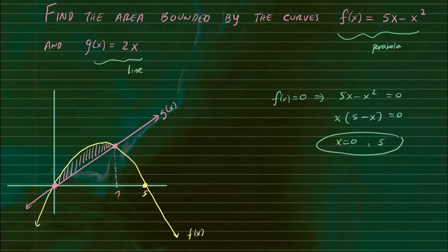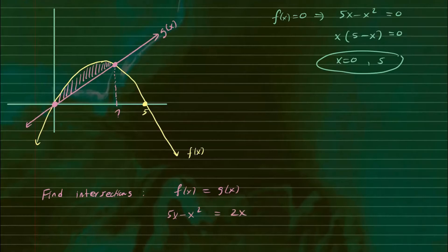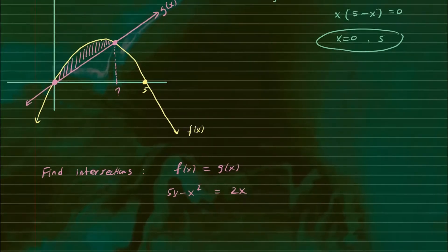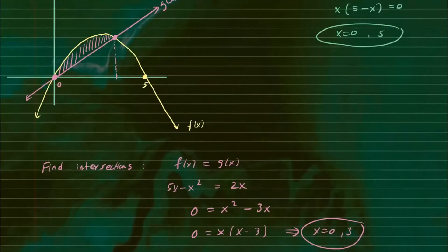To find the intersection of two curves, we set them equal to each other. So f of x equals g of x gives us 5x minus x squared equals 2x. Moving everything so x squared is positive, we get zero equals x squared minus 3x. Factoring out an x gives x times x minus 3 equals zero, which means they intersect at x equals zero and x equals three. So this other intersection point is three.